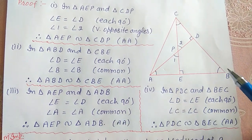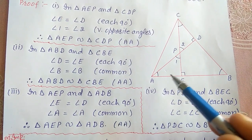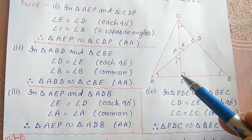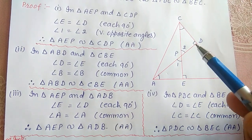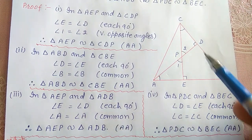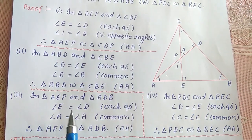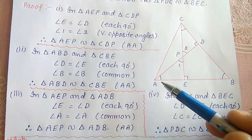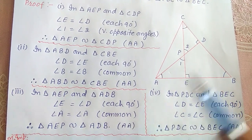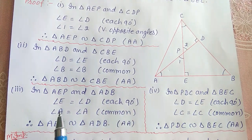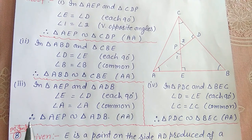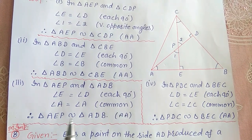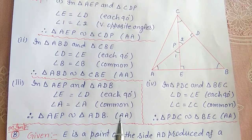Angle E equals angle D, each being 90 degrees, and angle A is common to both. Therefore, triangle AEP is similar to triangle ADB by the AA criterion.